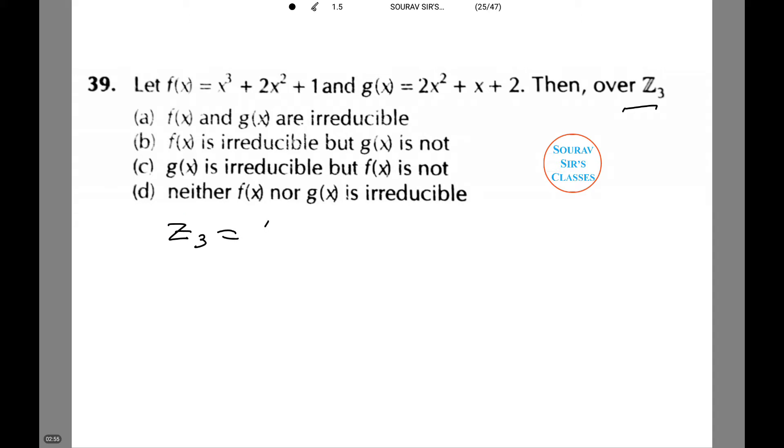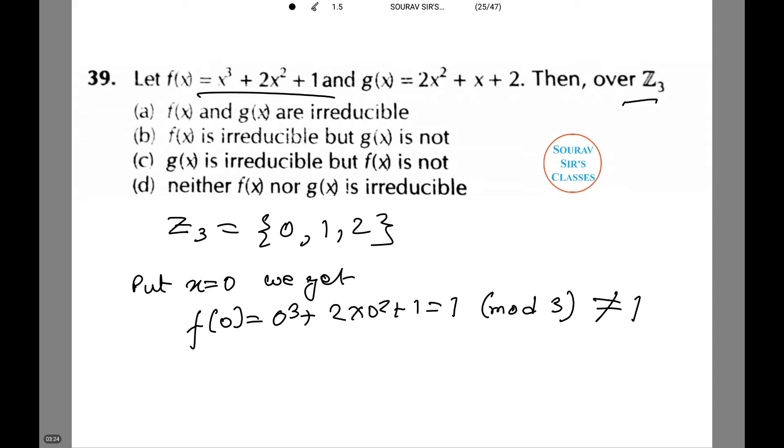On putting x equals 0, we get f(0) equals 0 cubed plus 2 times 0 squared plus 1 equals 1.